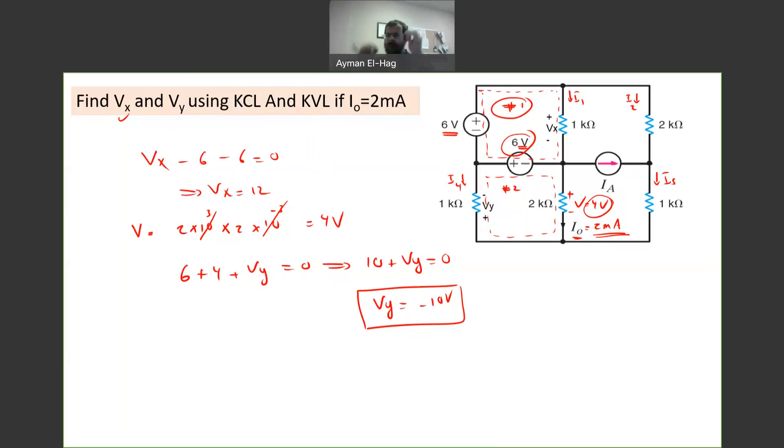Before you start putting all these variables, can I get some of the required variables without the need to go through all processes? Look to the loops. Is there a loop that has everything known except one unknown? Then I can find this value directly.